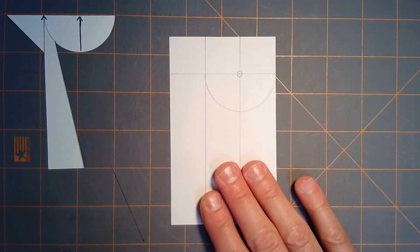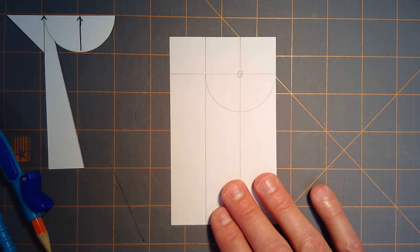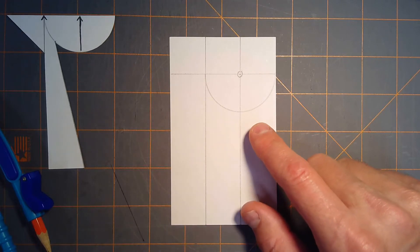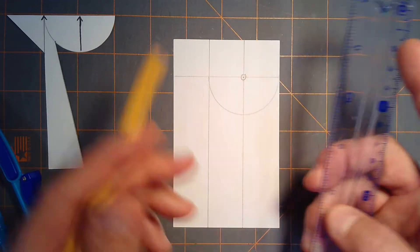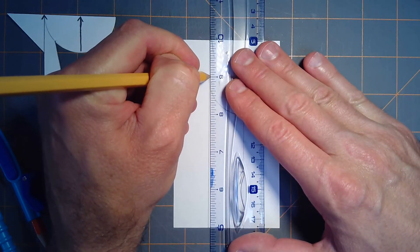All right, so that forms the blade of the tomahawk. If you imagine an actual hatchet or an axe or a tomahawk. Next, I'm going to measure down from this point one inch and just make a little reference mark.